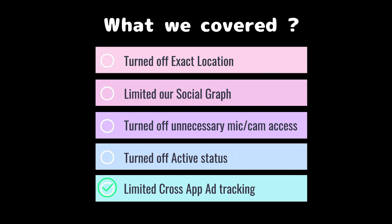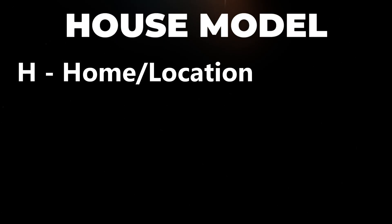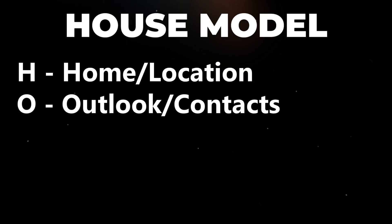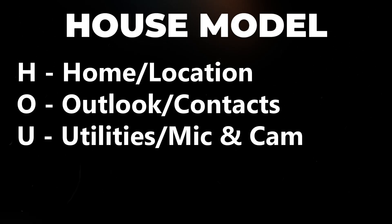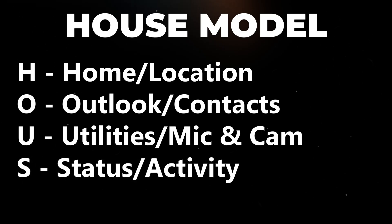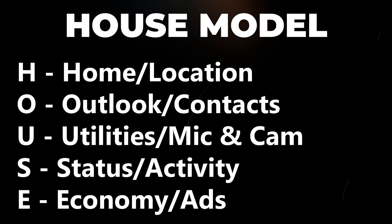That's a huge cut in your data exhaust. Here's a quick way to remember it with the HOUSE model: H stands for Home or Location — only share when you open the door. O stands for Outlook or Contacts — don't hand out your entire address book. U stands for Utilities — mic and camera, keep them off until you need them. S stands for Status or Activity — your pod's light doesn't need to be on for everyone. E stands for Economy or Ads — if data is currency, spend less by limiting personalization and partner tracking.